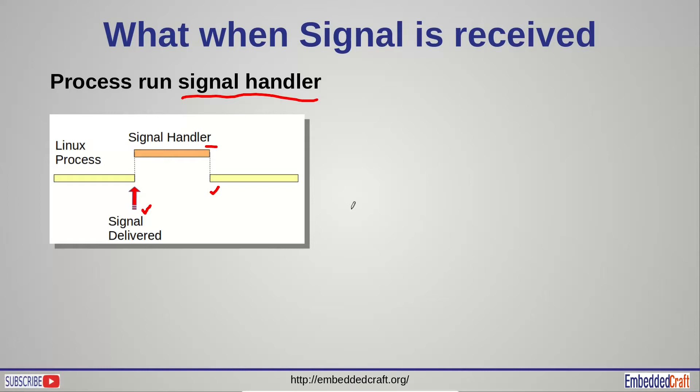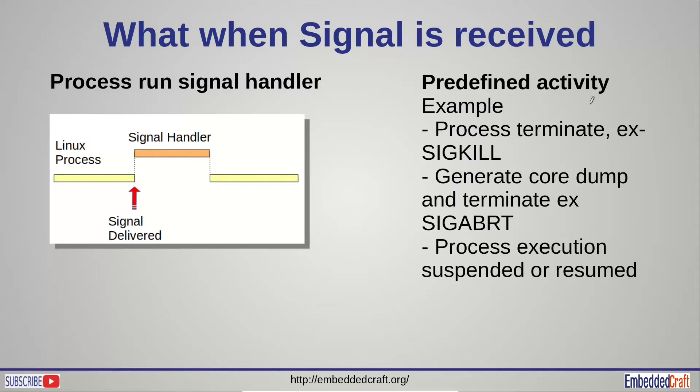For some signals there are predefined activities which a process will do upon receiving a signal. When SIG kill signal is received then the process will terminate. For some signals, core dump is also generated, for example SIG ABRT. In case of SIG ABRT signal, process is terminated and core dump is generated. Signal can also let process execution be suspended or resumed.